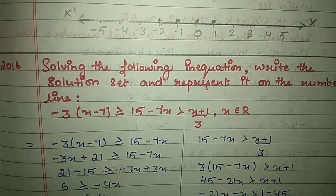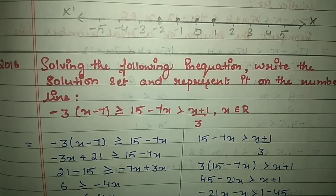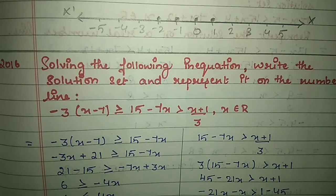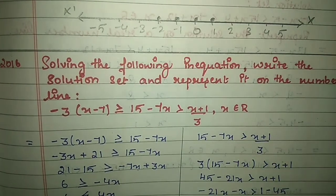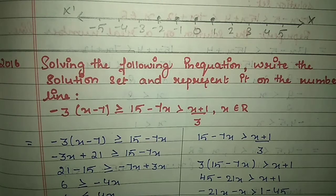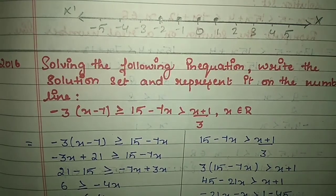Next, the 2016 question: solve the following inequation, write the solution set, and represent it on the number line. The inequation is minus 3(x minus 7) ≥ 15 minus 7x > (x + 1)/3, where x belongs to R.